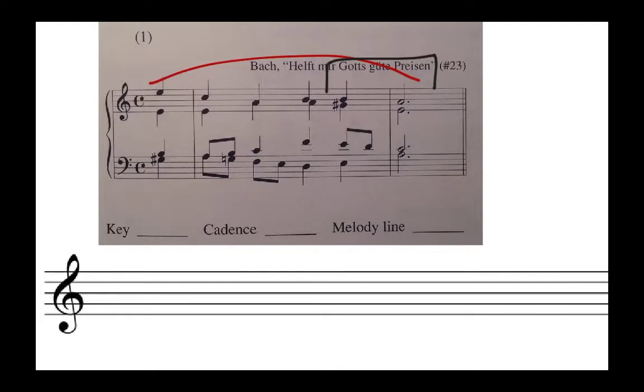So let's take a catalog of the notes that we have in the second to last chord. Here we have an E, here we have another E, here we have a G sharp, and here we have a B.